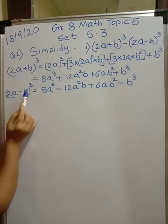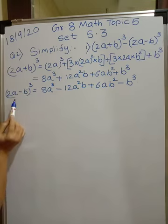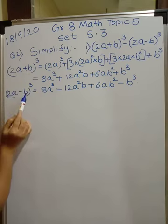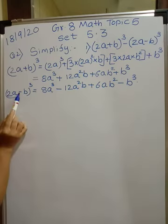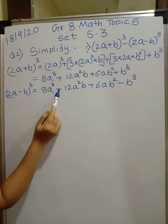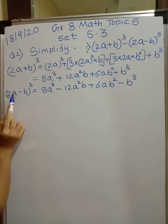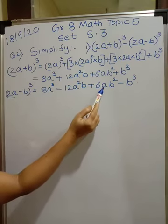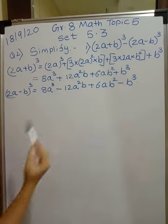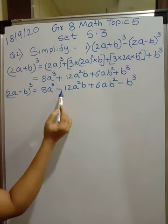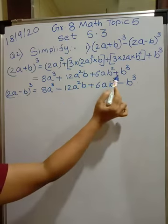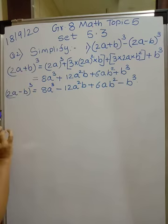Now for (2a - b)³. The identity (a - b)³ = a³ - 3a²b + 3ab² - b³ has alternate plus and minus signs. So the terms will be the same as (2a + b)³, but with alternating signs: minus, plus, minus.